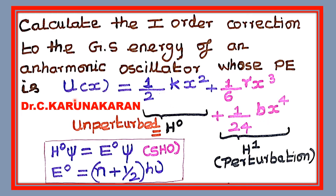In the potential energy function, there are three terms. The first term corresponds to the unperturbed system — this is the potential energy for the simple harmonic oscillator, which is (1/2)kx², where x is the displacement from the equilibrium distance. The second and third terms are called perturbation terms.